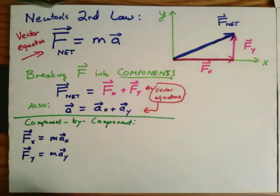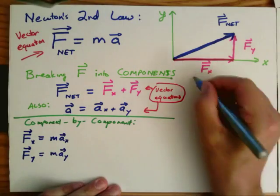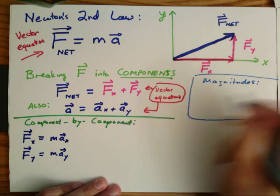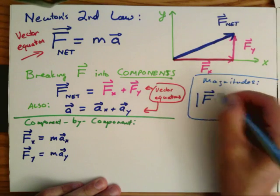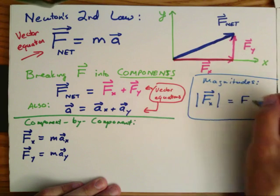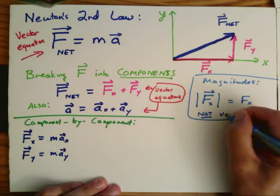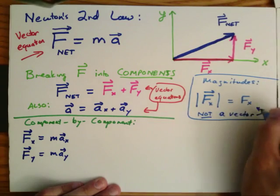Now, those are vectors, but of course, if it's true for the vectors, then it must be true for the magnitudes. And don't forget, we represent the magnitudes as the absolute value sign, or we just write down the vector symbol without the arrow on top, that's a magnitude. That's not a vector.